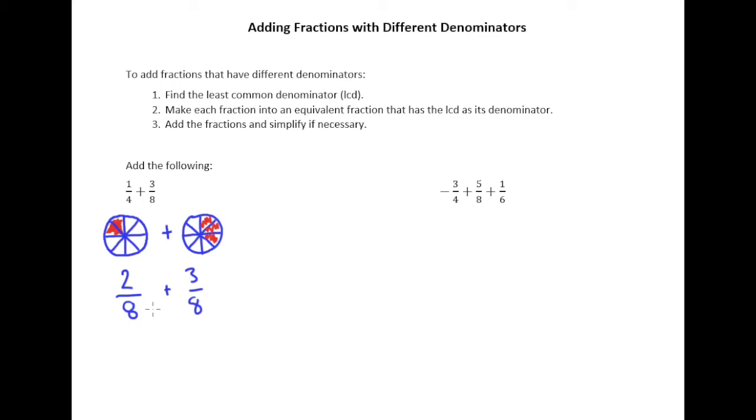We already know how to add fractions when the denominators are the same. We just add the tops: two plus three is five and put it over eight. Now let's draw a little picture to represent what this all means.